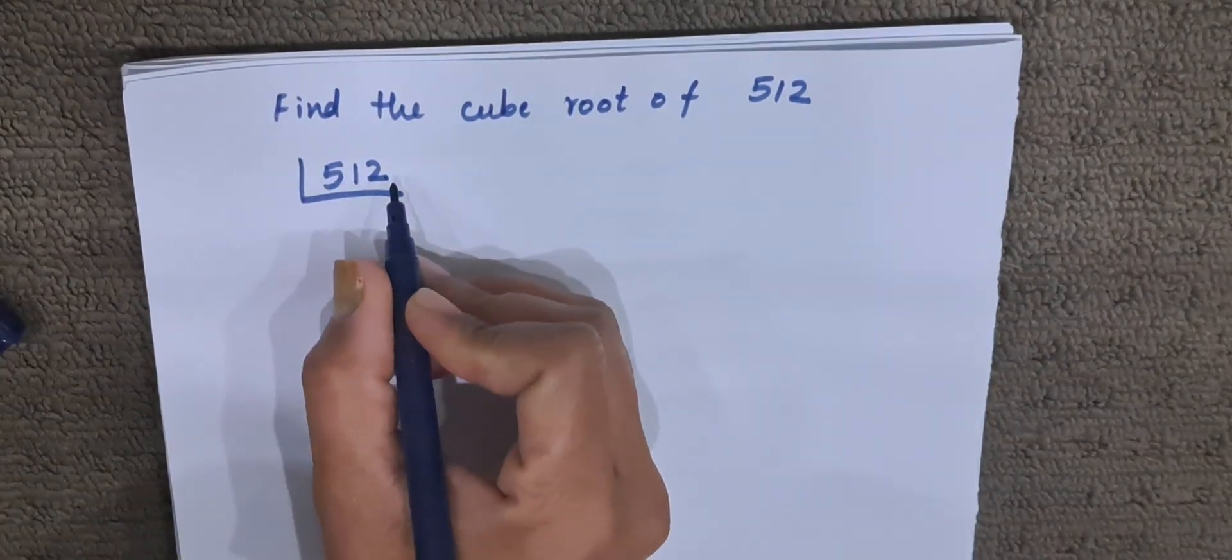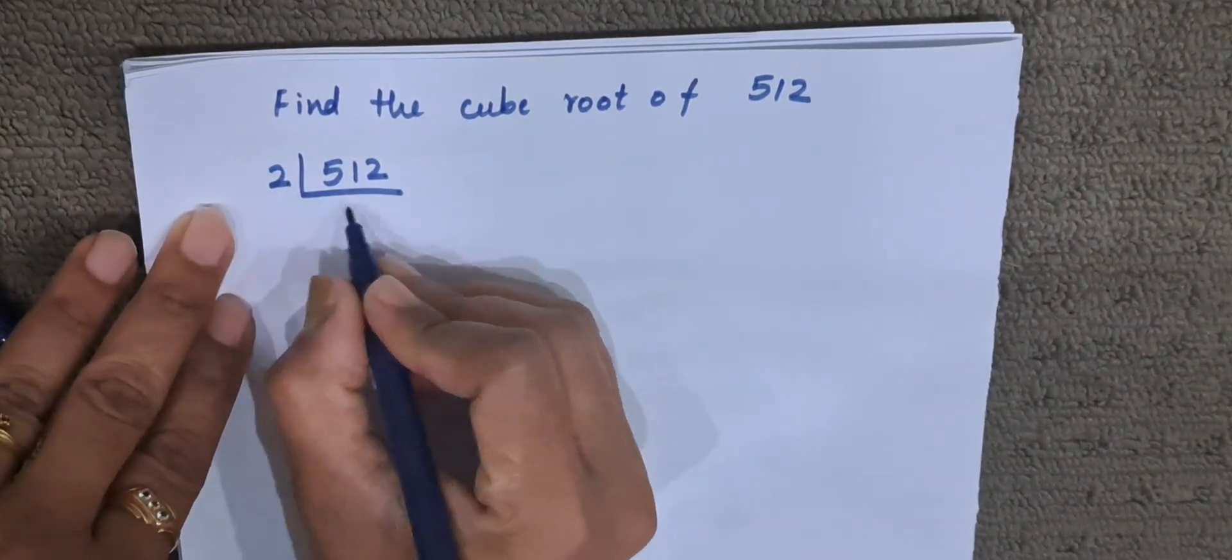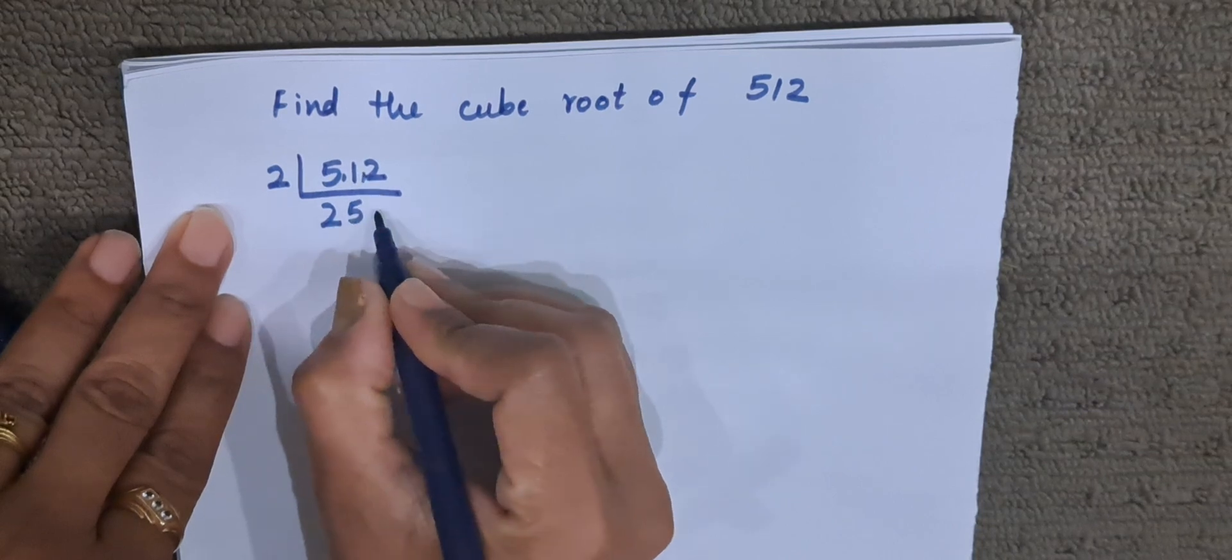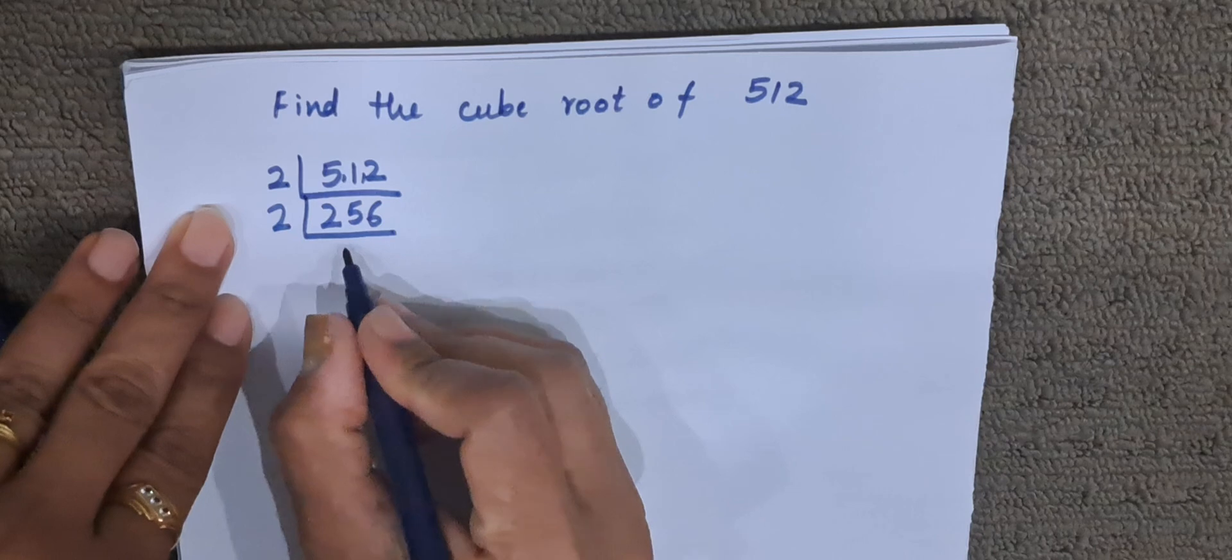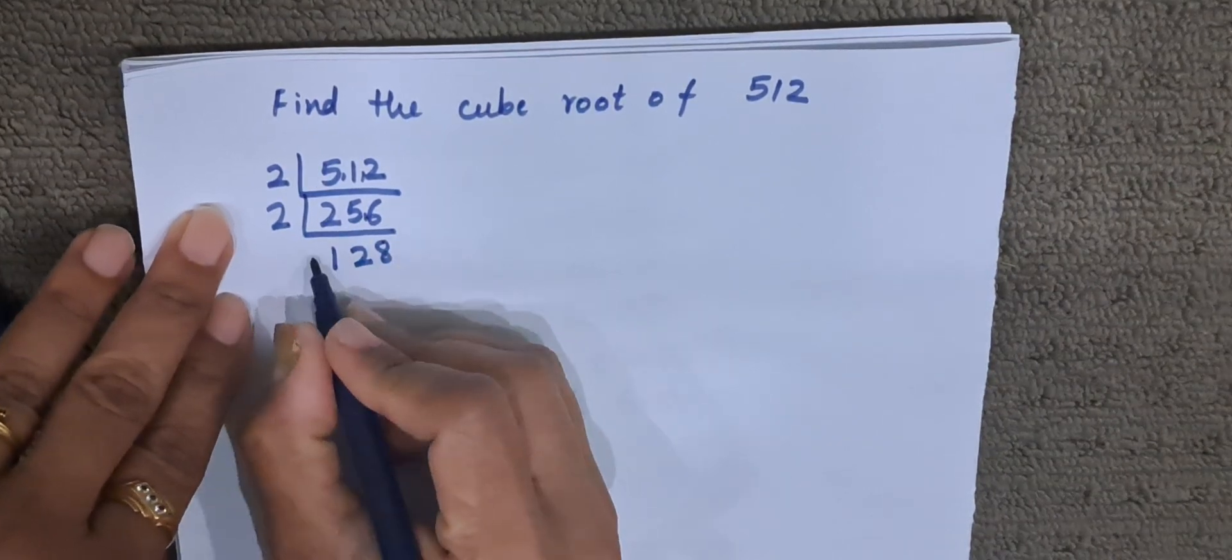Now we will see 512 is divisible by 2, let us divide this by 2. 2 times 2 is 4, 1 is the remainder, 2 times 5 is 10, again 1 is the remainder, 2 times 6 is 12. Now 256 is again divisible by 2. 2 times 1 is 2, 2 times 2 is 4, 1 carry 2 times 8 is 16.